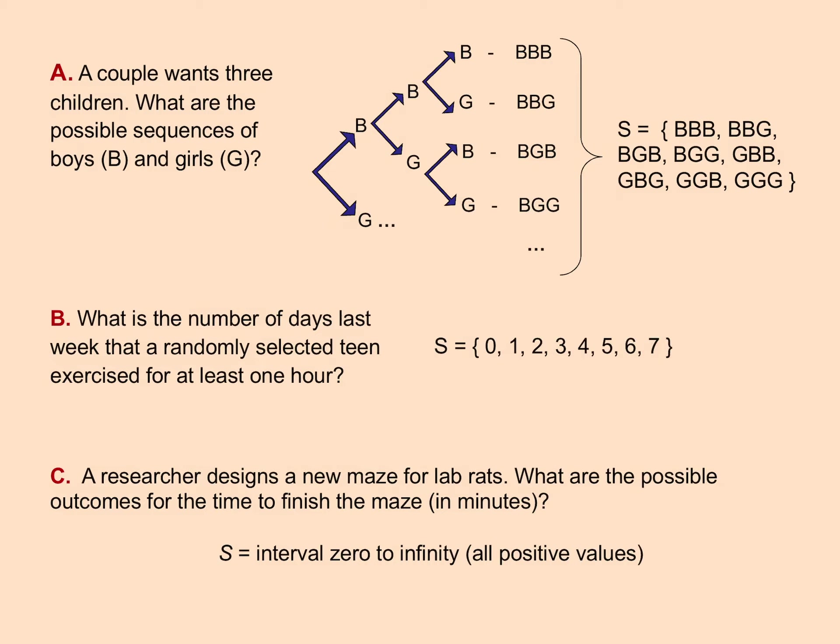For example C, a researcher designs a new maze for lab rats — the possible outcomes for time to finish the maze in minutes. You could put 100 rats in that maze and no two would have exactly the same finish time. You couldn't have a negative value — it has to take some time to move through the maze. Depending on how many decimal places you take the measurement, that gives a theoretically infinite number of possible events. That is a continuous sample space.